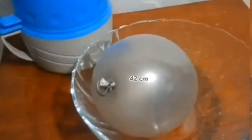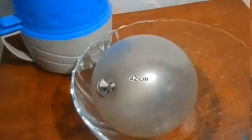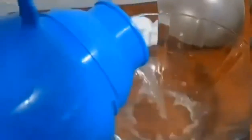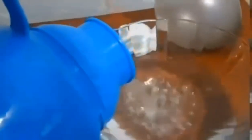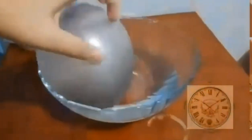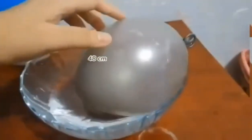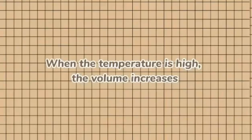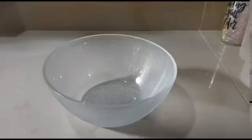First, we put the balloon in hot water. It is 42 cm, being measured by the tape measure. We're gonna wait up until 5 minutes and see the difference. And as you can see, it is now 48 cm. When the temperature is high, the volume increases.